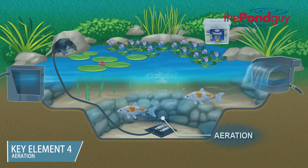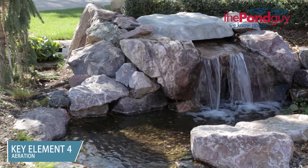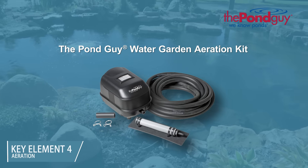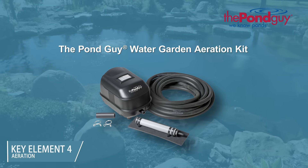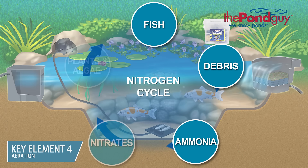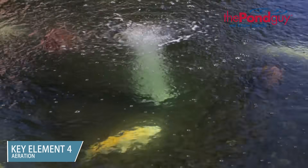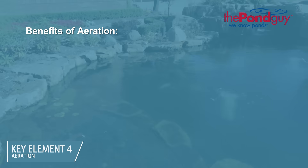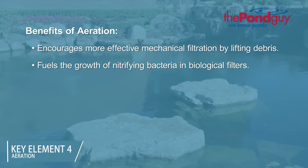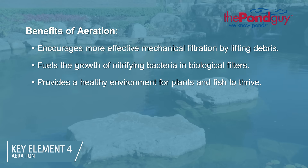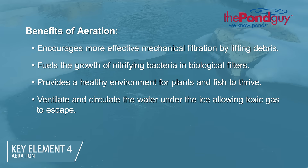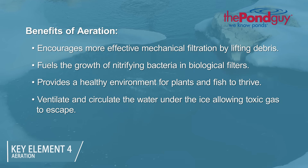Since each plant blooms and absorbs nutrients at different times, having a variety of aquatic plants ensures they are always providing your water garden with the maximum benefit. The fourth key element to a balanced ecosystem is aeration. Although the splashing of waterfalls and fountains adds some oxygen to the water's surface, diffused aeration kits such as the Pond Guy Water Garden Aeration Kit are much more efficient at adding oxygen and circulating water throughout the pond. Proper aeration has a positive influence on all aspects of the nitrogen cycle — it encourages more effective mechanical filtration by lifting debris from the pond's bottom, fuels the growth of nitrifying bacteria in biological filters, and provides a healthy environment for plants and fish to thrive. Aeration can also be used during the winter months to ventilate and circulate water under the ice, allowing toxic gas to escape and keeping your fish safe throughout the winter.